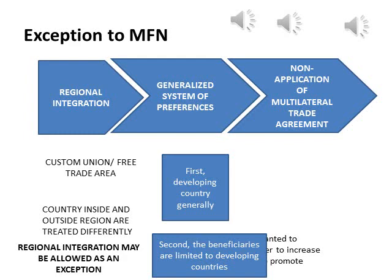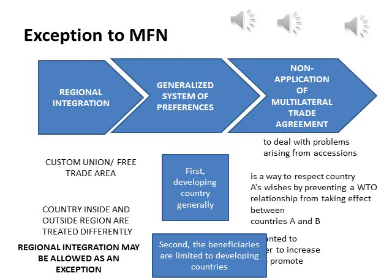These Article 13 provisions were created to deal with problems arising from accessions. Ideally, the MFN rule would be strictly applied so that when country B accedes to the agreement, it is required to confer MFN status on all other members, and they in turn are required to confer MFN status on country B. However, country A, which is already a member of the WTO, may have reasons for not wanting to confer the rights and obligations of the WTO on new member B. Because the WTO only requires the consent of two-thirds of the existing membership for accession, it is conceivable that country A might, against its will, be forced to give MFN status to country B. WTO Article 13 is a way to respect country A's wishes by preventing a WTO relationship from taking effect between countries A and B.